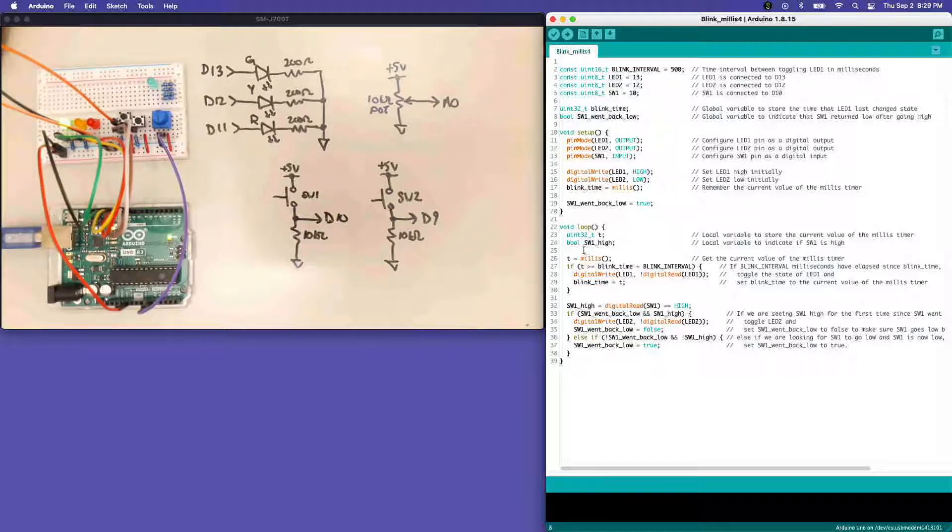We're going to start out by checking the millies timer and see if it's time to flip the state of LED one to keep track of the blinking behavior of the green LED, just like before. Then we're going to read the value of switch one. Since we're going to have to do that a couple of times, we're going to use the digital read to read switch one and test to see if its value is equal to high. The result of this Boolean expression is going to be true or false.